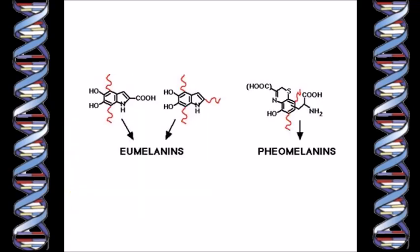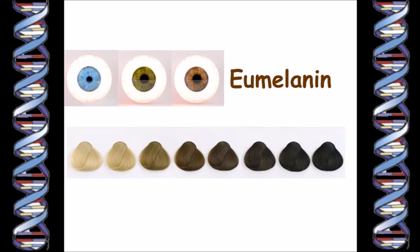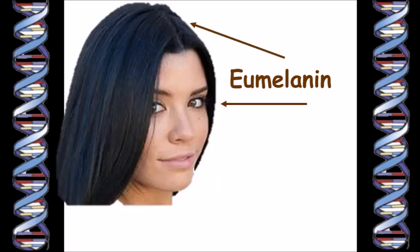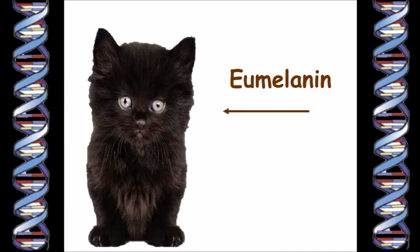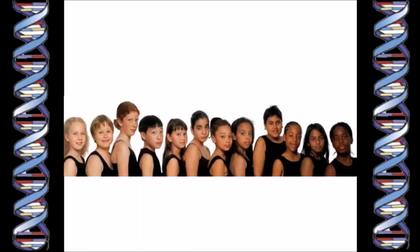Eumelanin is related chemically to pheomelanin but it's a slightly different molecule and its color is dark brown or black. It's eumelanin that determines our eye color, makes hair color brown or black, and it's the black color in fur or feathers. Apart from just looks, eumelanin has several functions — when our skin is exposed to the sun, our melanocytes produce extra melanin which makes our skin darker.